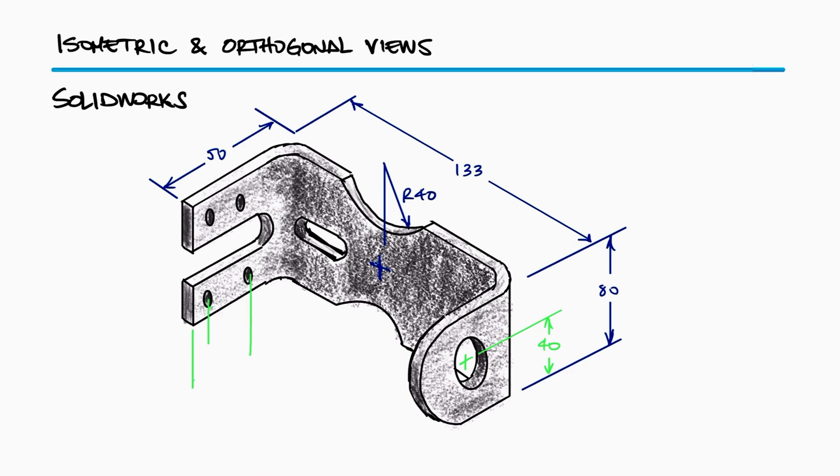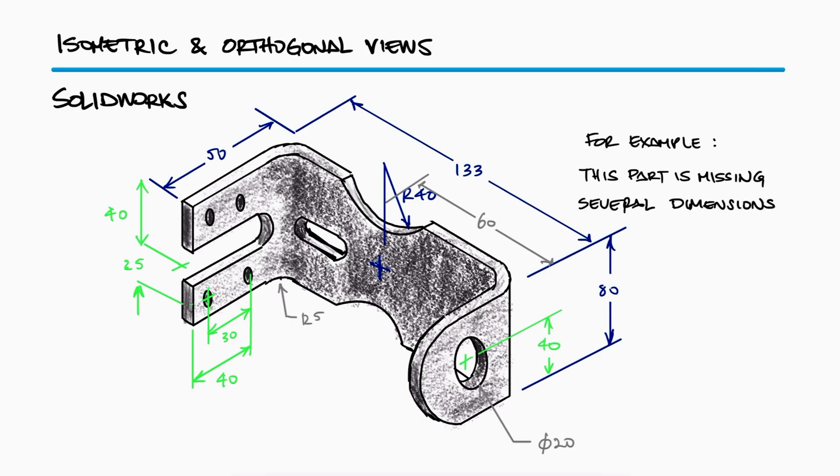For example, if the location of the holes of a bracket is not dimensioned, there is an infinite number of possible brackets that have the same size and hole diameters, only with different locations for the holes.